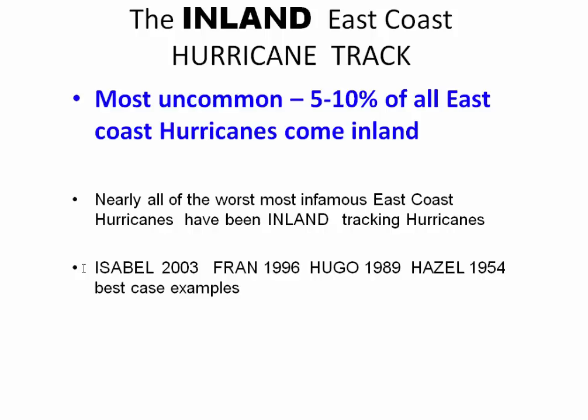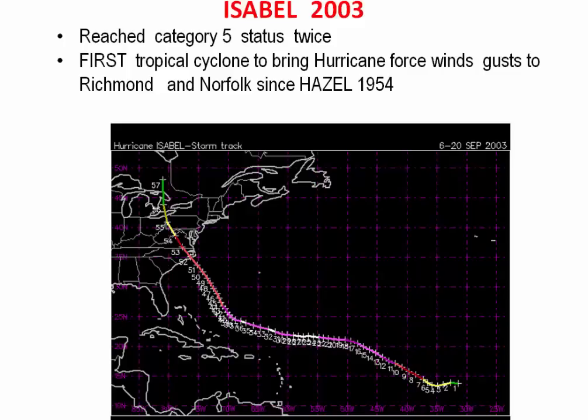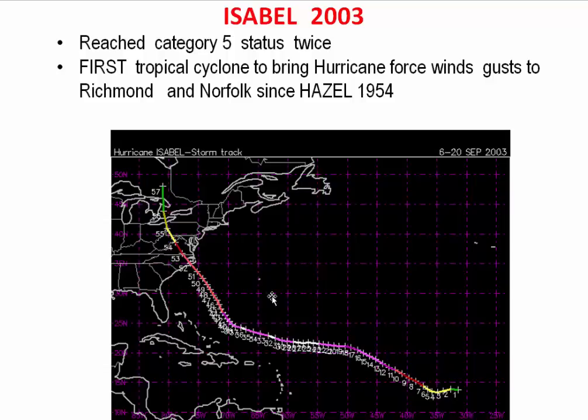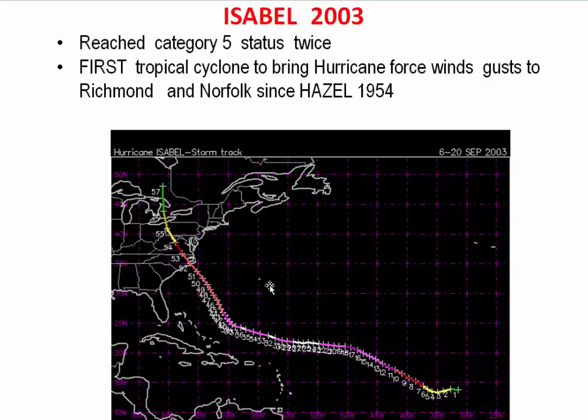Now the inland hurricane track — the most uncommon type, representing 5–15% of all East Coast hurricanes. Yet nearly all of the famous East Coast hurricanes responsible for the biggest damage were inland hurricanes: Isabel 2003, Fran 1996, Florence 2018, Michael 2018 to some degree, Hugo 1989, Hazel 1954, the 1933 Chesapeake Bay hurricane, and the 1938 Long Island/New England hurricane. Let's look at Isabel — very good track. It gets forced inland, reached Category 5 status twice, and was the first real tropical cyclone with hurricane-force winds to hit Richmond and Norfolk since 1954.